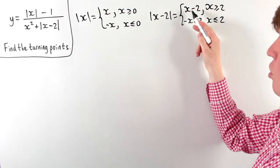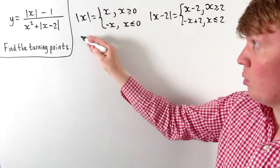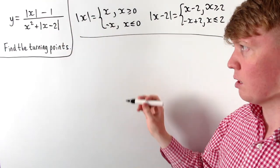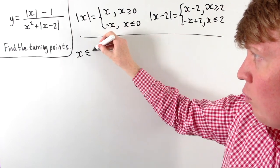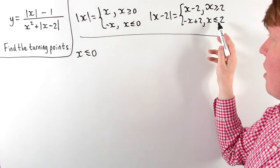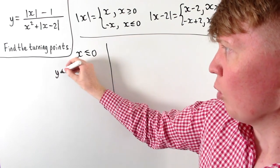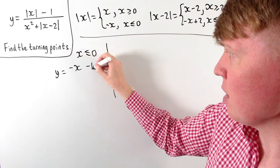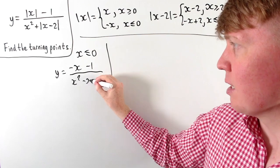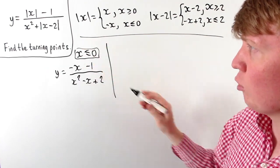When x equals 2 or x equals 0 both expressions give 0. So depending on the size of x, we can split the function into three cases. In the first case, when x is less than or equal to 0, both moduli are in their negative forms, giving y equals negative x minus 1 over x squared minus x plus 2.